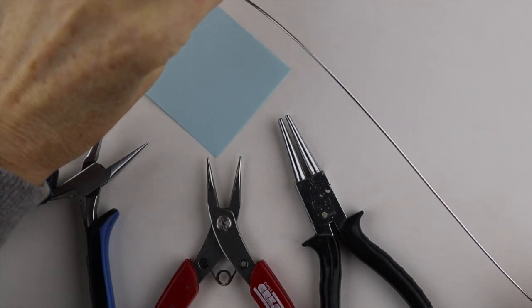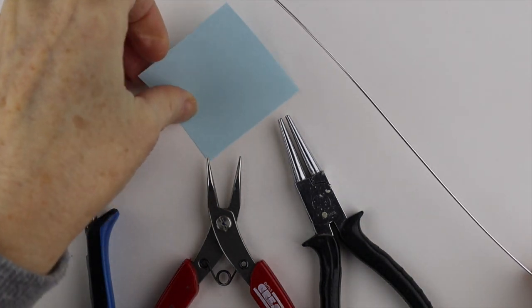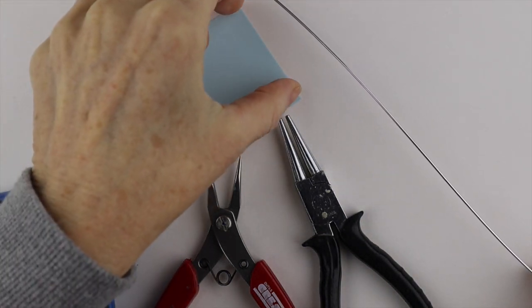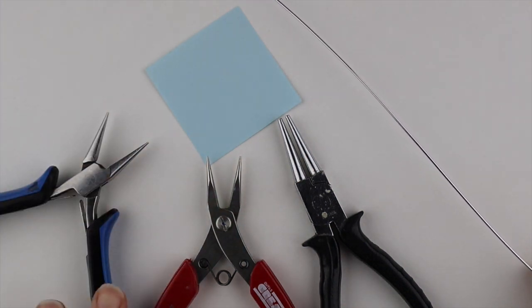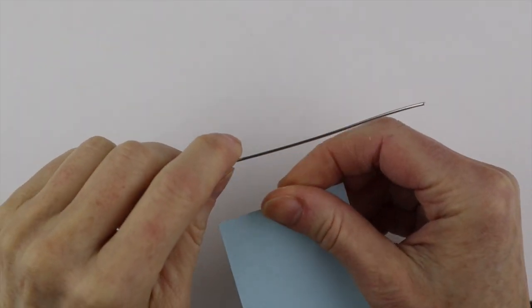For the first star I'm going to use a 1.2 millimeter aluminum wire which is about an 18 gauge. I have a piece of paper that's the length of one of the sides of the star and my tools.